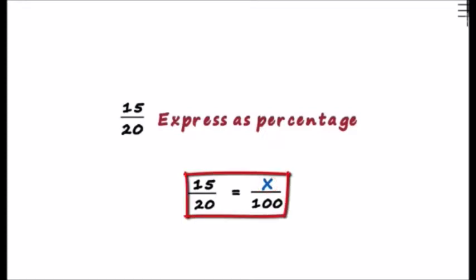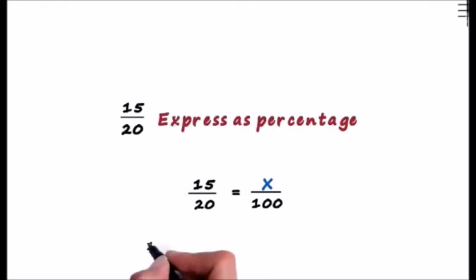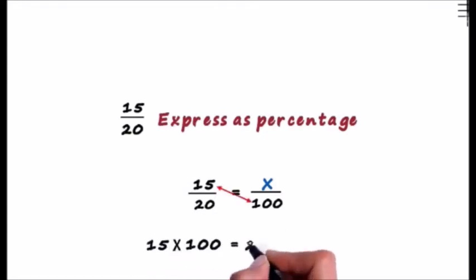These are actually two equal ratios. It means this is proportion. Since this is proportion, 15 into 100 is equal to 20 into x. The product of the extremes is always equal to the product of the means.